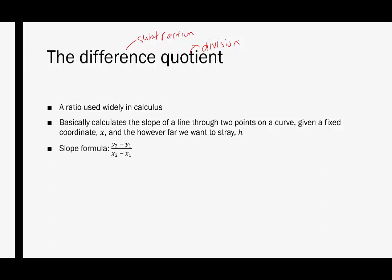Just for comparison's sake, the slope formula, you may recall, is y2 minus y1 over x2 minus x1 — that's the change in y over the change in x. The difference quotient is just a fancy way of rewriting y2 minus y1. So we're going h units from x, and then we're subtracting away f of x, and in the denominator it would be x plus h minus x, where the x's cancel, leaving us just with the variable h.